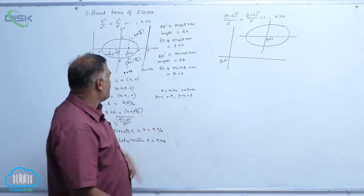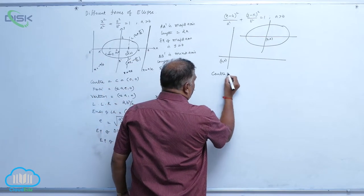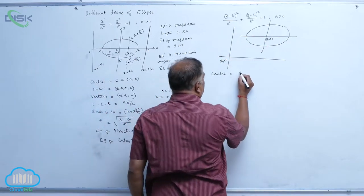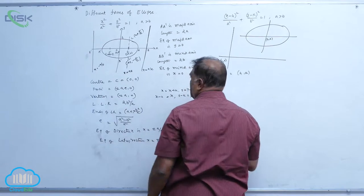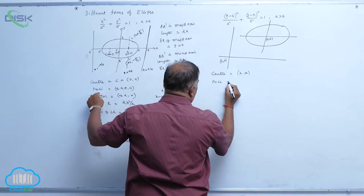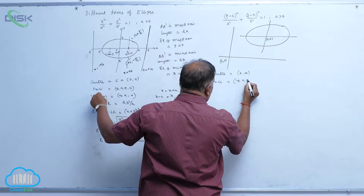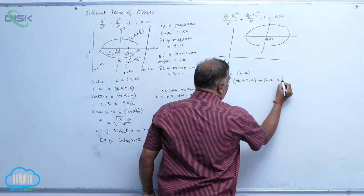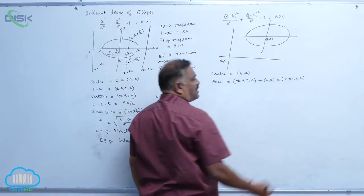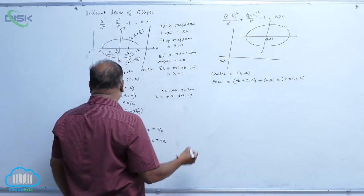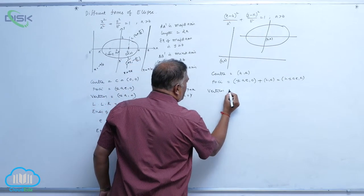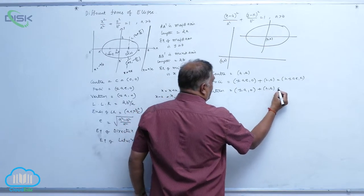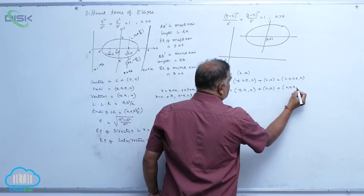We will now write the properties one by one for the shifted ellipse. The center is now (h, k). The foci are at (h ± ae, k). The vertices are at (h ± a, k).